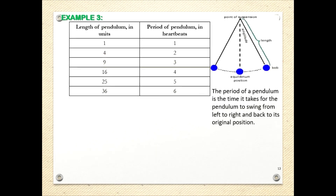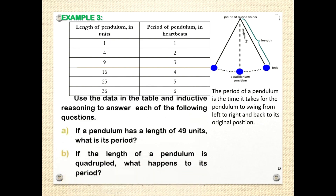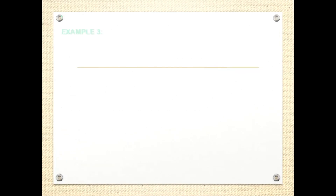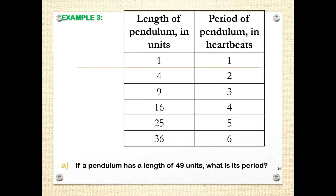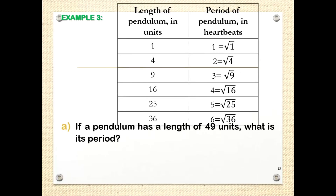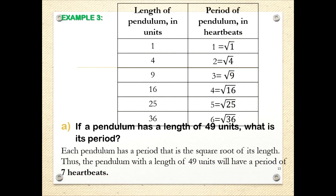Example 3: Let's study this table about the pendulum. On the first column we have the length of the pendulum, and on the right column we have the period. We'll use this table to answer two questions. Number 1, letter A: if a pendulum has a length of 49 units, what is its period? We can observe that the period of the pendulum is just the square root of the length. Thus, the pendulum with a length of 49 units will have a period of √49, which equals 7 heartbeats.